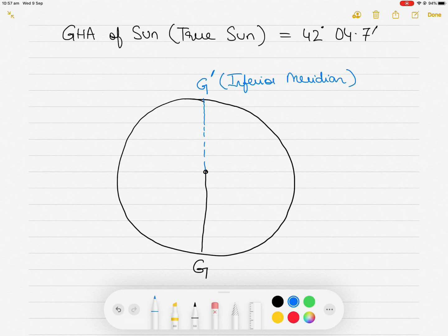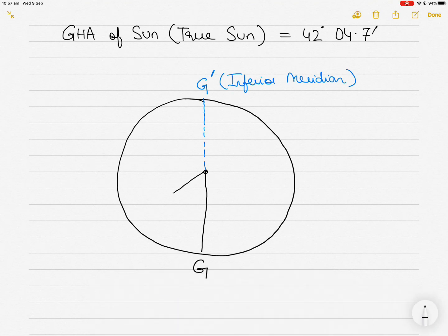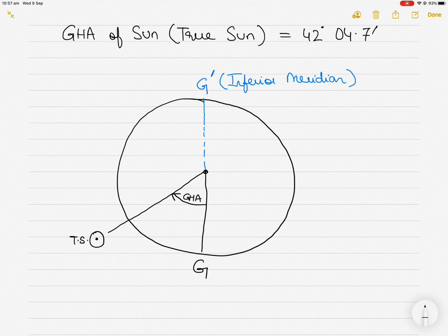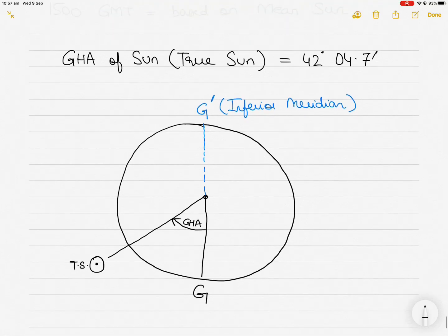If I say the GHA of the sun is 42 degrees 4.7 minutes — GHA is an angle measured westerly from the Greenwich meridian. Going westerly from the Greenwich meridian gives us the GHA, and that marks the position of the true sun. For time purposes, the Greenwich Apparent Time is measured from the inferior meridian of Greenwich, so we add 180 degrees to the GHA.